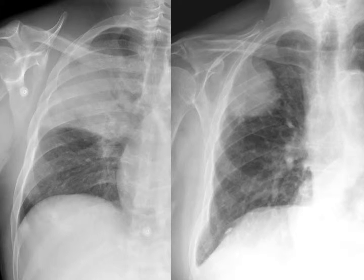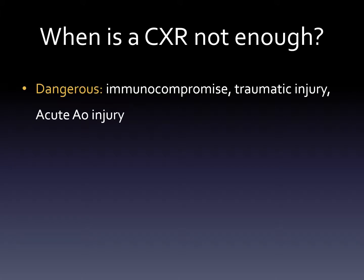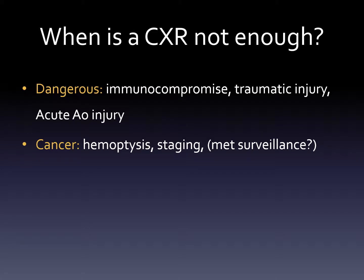Here this looks like a pneumonia. If the patient doesn't have very severe symptoms, we might be able to treat based on this and that might be enough. But in this patient, the whiteness we're seeing in the lung is more round — that looks like a mass, possibly a cancer. This probably needs a CT so we can figure out if it is a cancer. So when is a chest X-ray not enough? Dangerous situations — very sick patients where infections can get serious, patients after a trauma, or if something's wrong with the aorta. Cancer usually needs a CT.